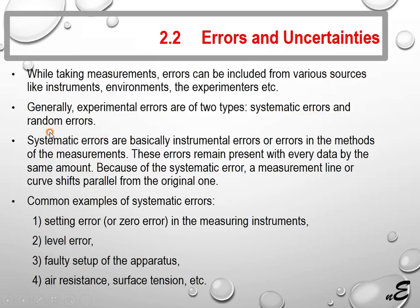Systematic errors and random errors. Systematic errors are basically instrumental errors or errors in the methods of the measurements. These errors remain present with every data by the same amount. Because of the systematic error, a measurement line or curve shifts parallel from the original one.